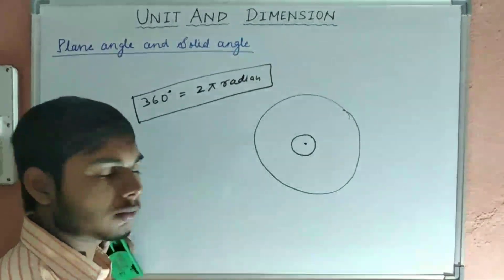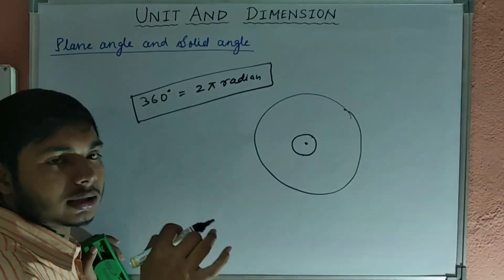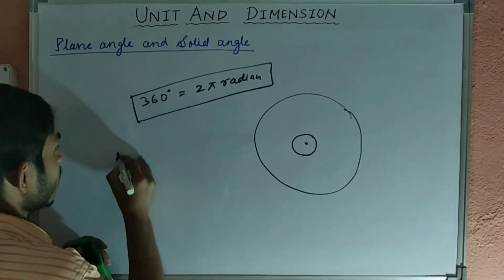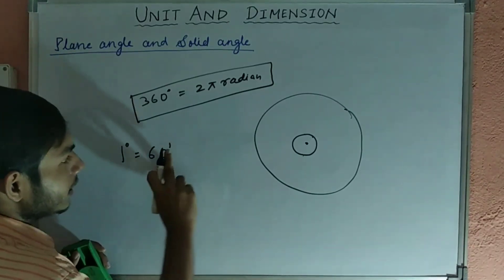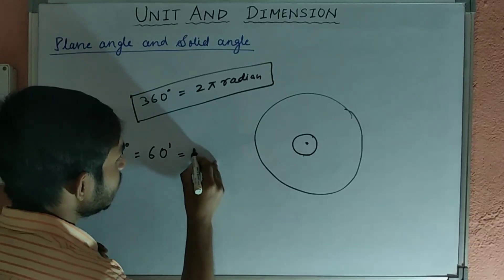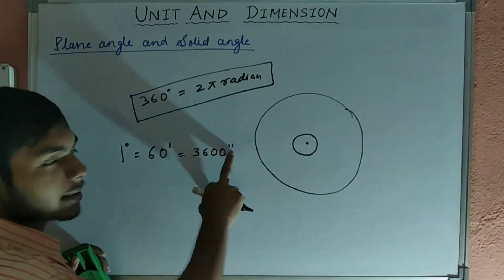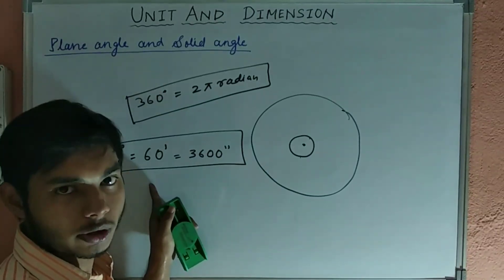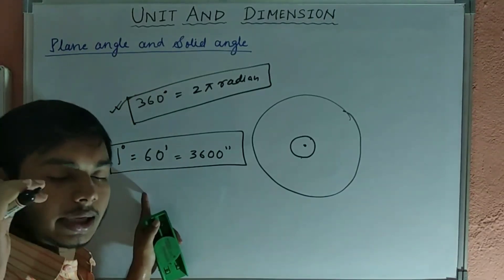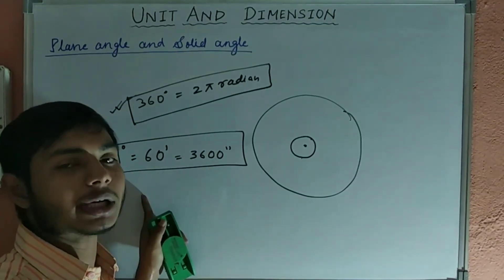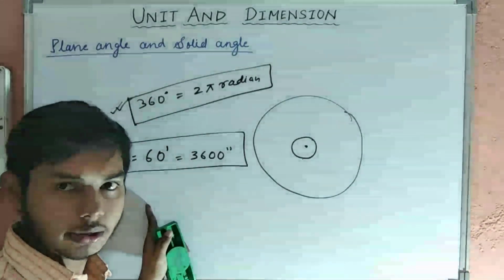Now, one thing more. Relation between degree and minute and second. One degree equal to 60 minutes. This is the sign of minute. Equal to 3600 seconds. This is sign of second. So, this relation is also important for you. From these two relations, you can find any values relation between radian, degree, second, or minute.